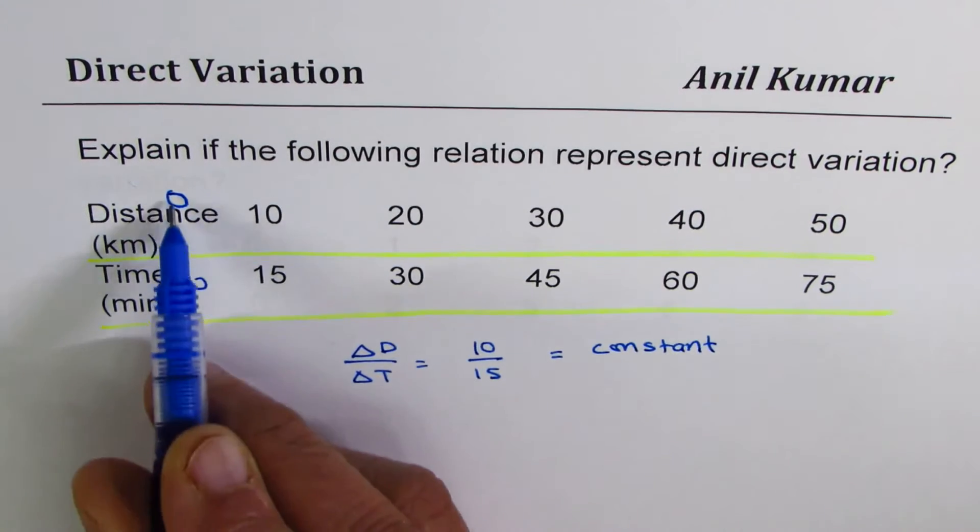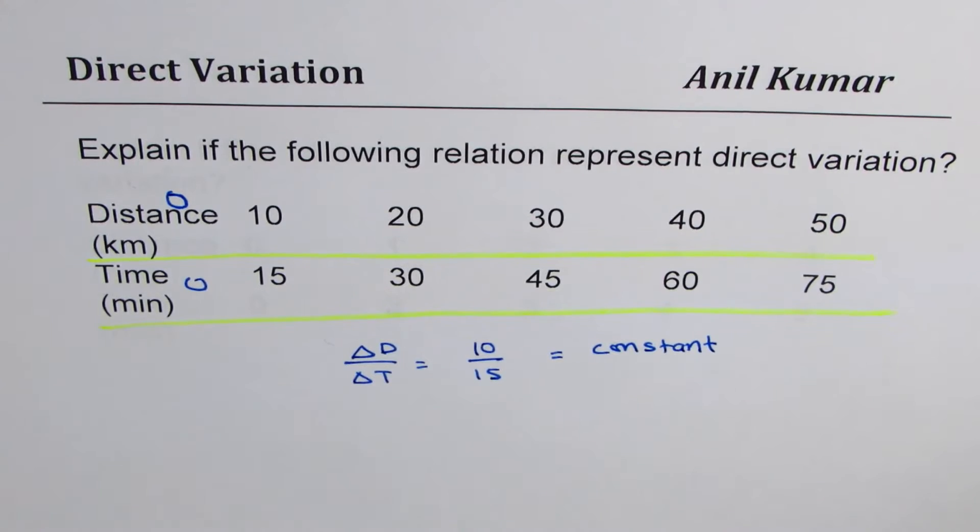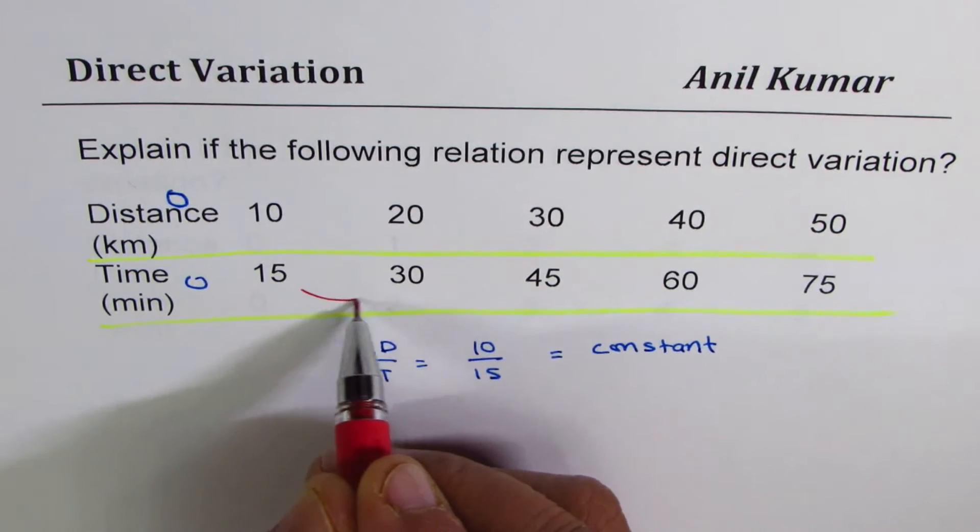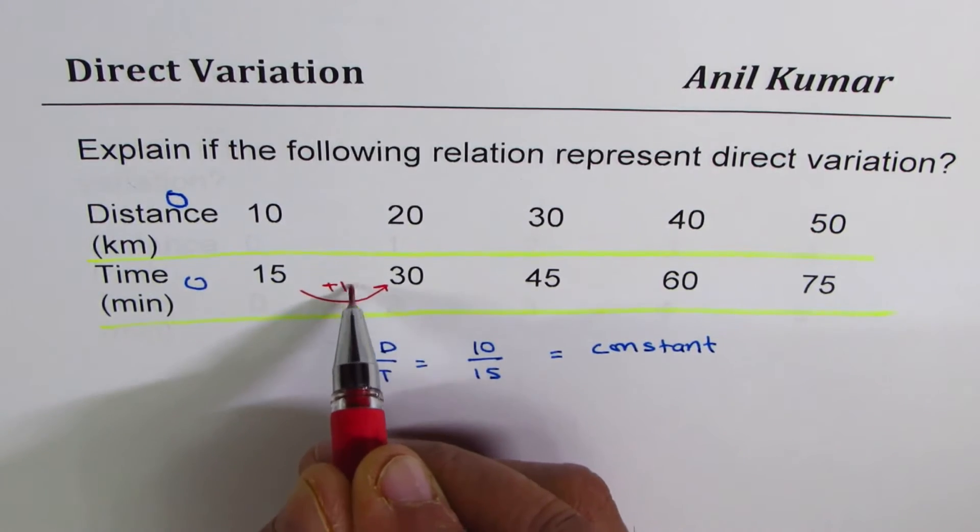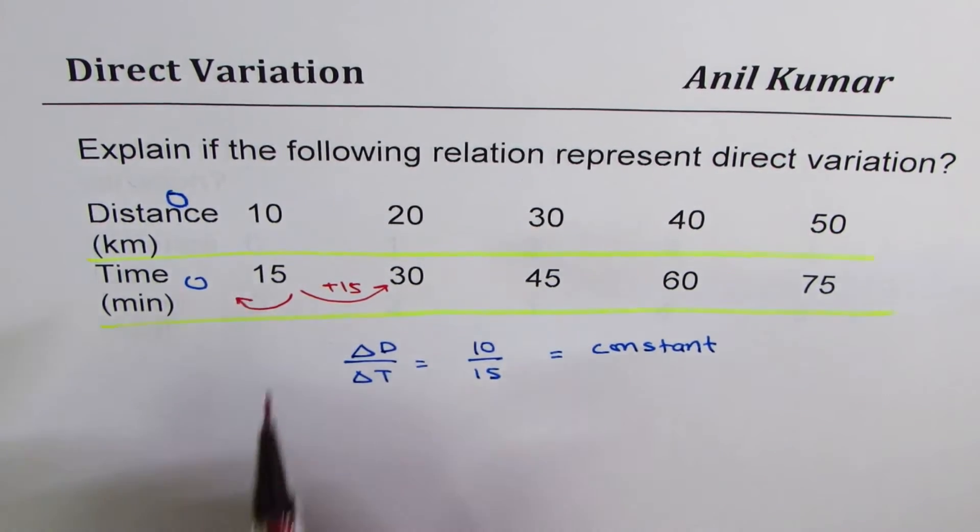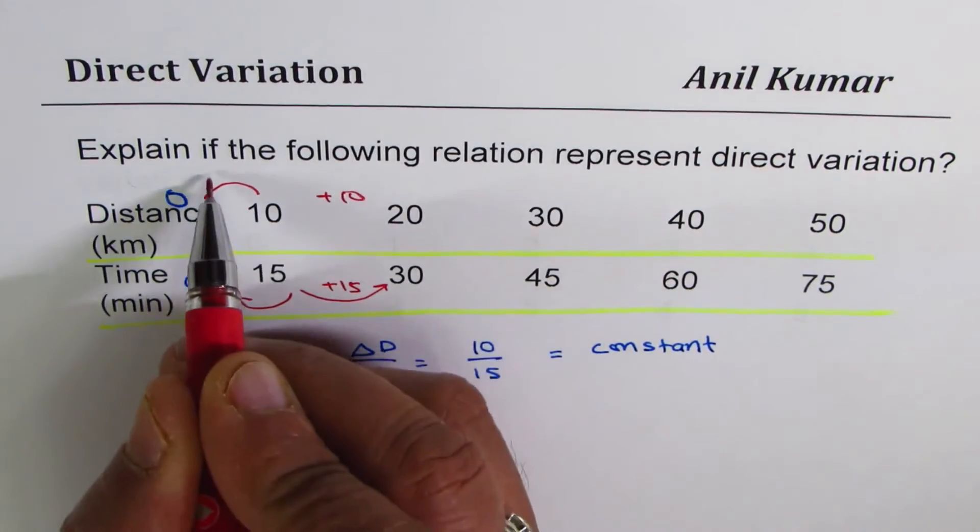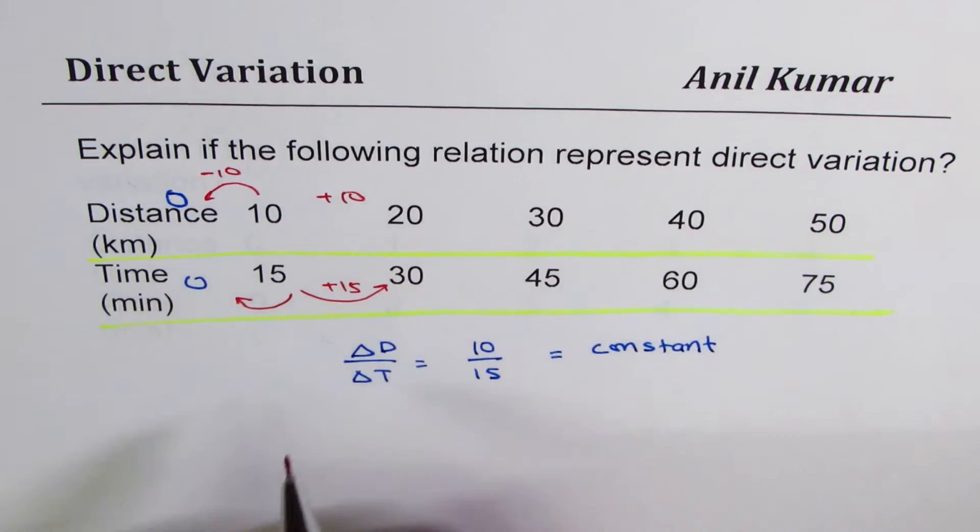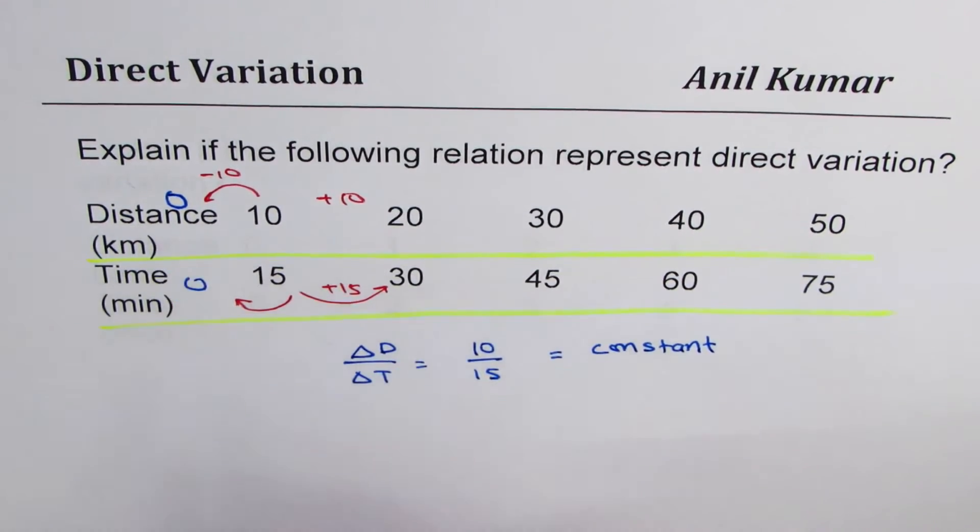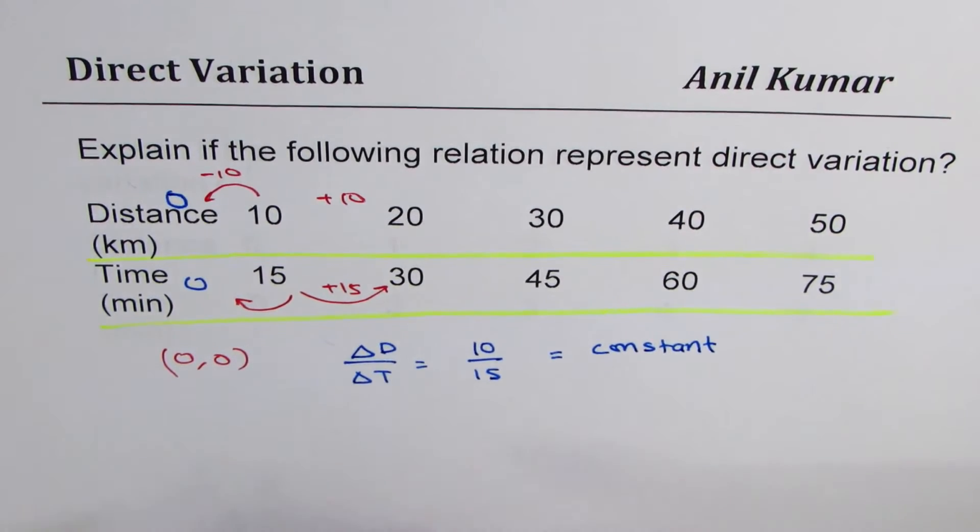Now you need to check if at 0 time, do we get 0 distance. So how do you get 0? We are going up by 15 for time. So if I take away 15, then I get 0. On the other hand, we are going up by 10. If I take away 10, we do get 0. That means the starting point is 0, 0, and therefore, it represents direct variation.